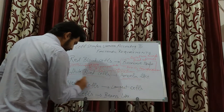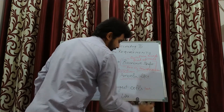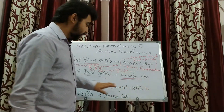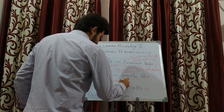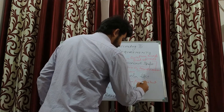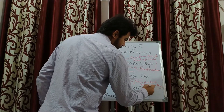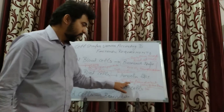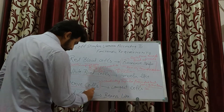Nerve cells are known as the longest cells, with a length of around 1 meter. They are so long because they help in conducting impulses from distant body parts to the brain and from the brain back to distant body parts, requiring them to travel long distances.